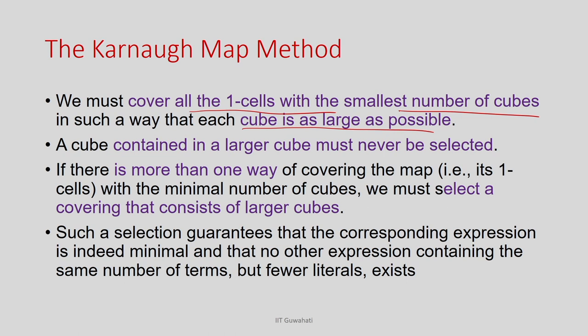My objective is to create as large a cube as possible. If there is a 1 which can be covered by a cube of size 2 and the same 1 can be covered by a cube of size 4, I will choose the bigger one. If a cube already contains a larger cube, that smaller one will be removed. And if there is more than one way of covering all the 1-cells with minimum number of cubes, I select the covering that consists of larger cubes, because larger cubes means a smaller number of literals. This is how Karnaugh Map helps us identify the minimum expression corresponding to a switching function.